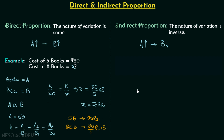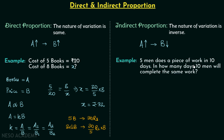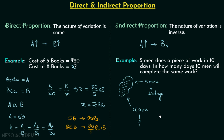Now we will move on to the example problem of indirect proportion. We have a piece of work and 5 men complete it in 10 days. We increase the number of men to 10 and need to find how many days they will take. It is certain that 10 men will take fewer days than 5 men. So quantity A is increasing from 5 to 10, and quantity B will be decreasing from 10 to less than 10.